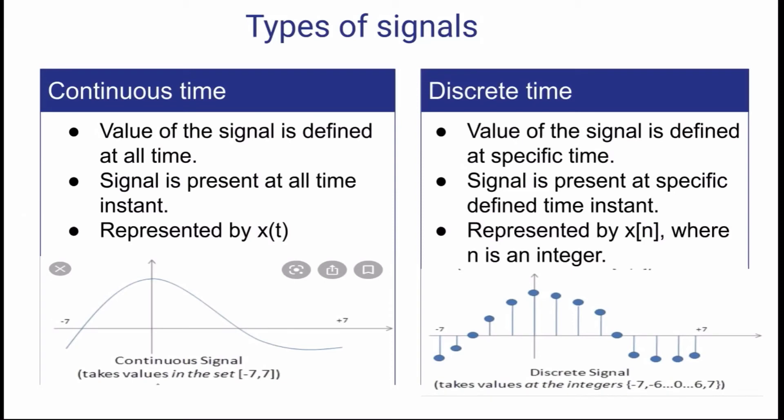So then we go ahead. The types of signals, so broadly classified, our types of signals are continuous time and discrete time. Continuous time like the definition, it is present at all time, it is continuous at all time, there is no break, at all time it will be present. And it is represented by your x(t). You have to be very cautious about this x(t) term.